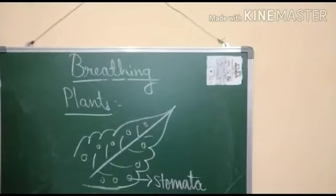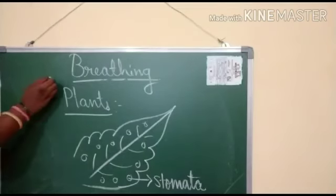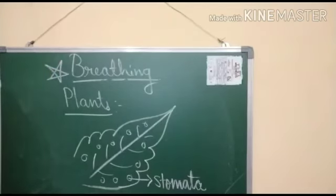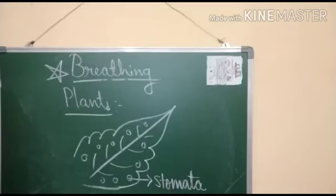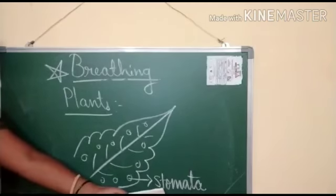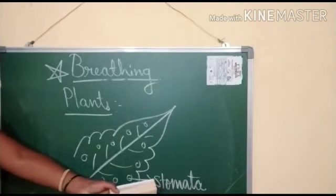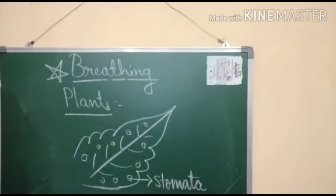This is the third characteristic difference between plants and animals, that is breathing. In animals, breathing organs are different: fish breathes through gills, frogs breathe through lungs and skin, human beings through lungs, and insects through tiny air holes called spiracles. Whereas in plants, the breathing organ is known as stomata. Now we will see the remaining part in the next class. Thank you children.